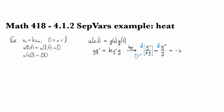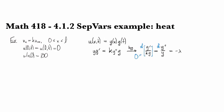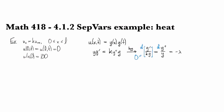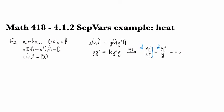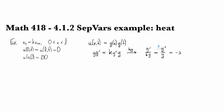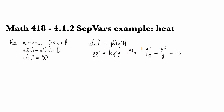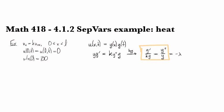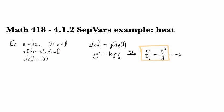And so that tells me that the right-hand side is a constant function of x. And I'll call that constant minus lambda. And then the reasoning, of course, is completely symmetric. So if I did d/dt of both sides, that would tell me that the left side is also a constant.